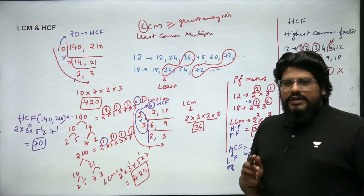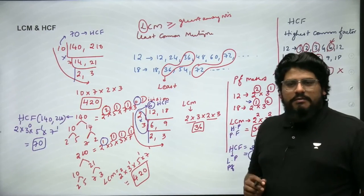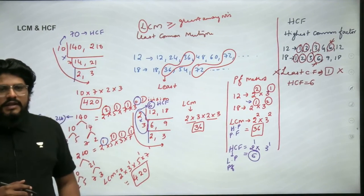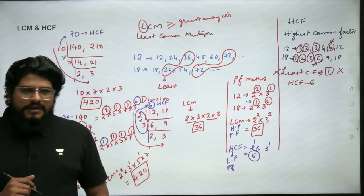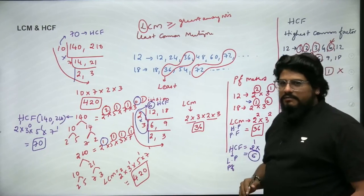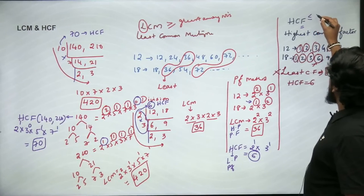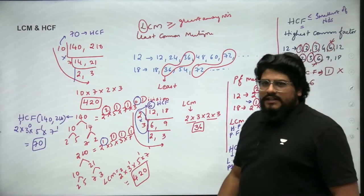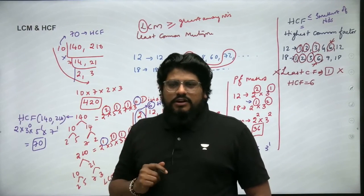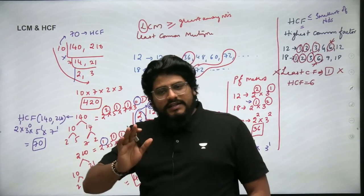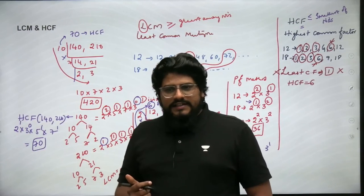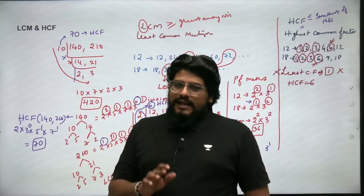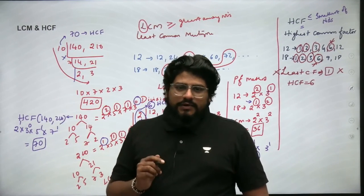To summarize: for LCM, take the highest power of each prime factor. For HCF, take the least power of each prime factor. Also remember: HCF will always be less than or equal to the smallest of the given numbers, while LCM will always be greater than or equal to the greatest of the given numbers. For example, HCF of 12 and 18 is 6, and HCF of 140 and 210 is 70.